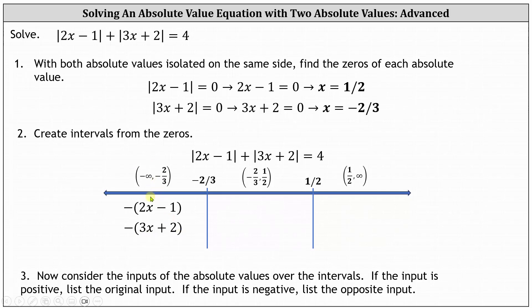This indicates that over the first interval, we replace the two absolute values with those opposite expressions, which we'll use later. For the next interval, the open interval from negative ⅔ to 1½: 2x minus 1 is still negative over this interval, so we list the opposite of the quantity 2x minus 1. However, 3x plus 2 is positive in this interval because x is greater than negative ⅔, so we list the original input of 3x plus 2. Over this interval, we replace the two absolute values with these two expressions.